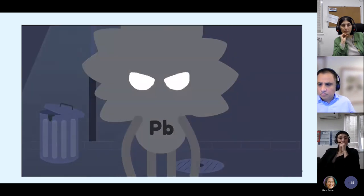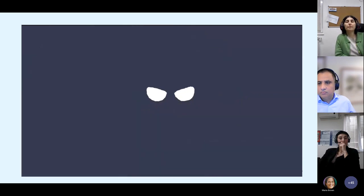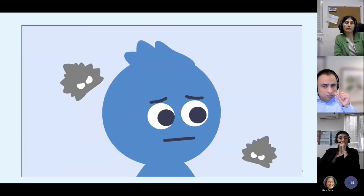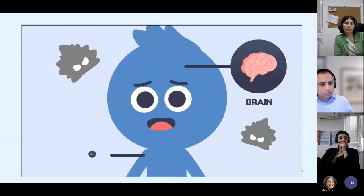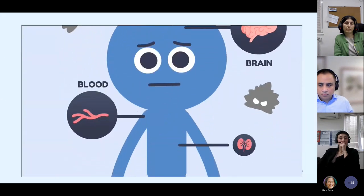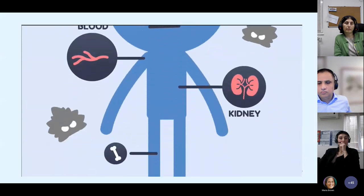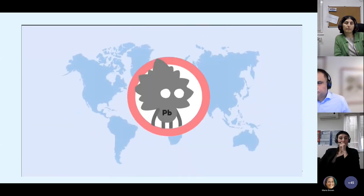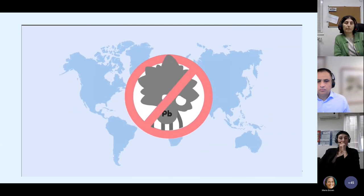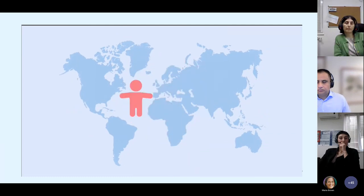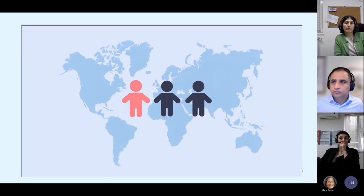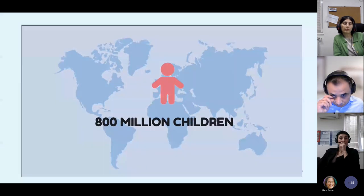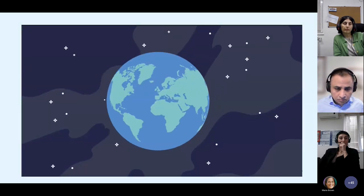Lead is a highly toxic metal with particularly harmful effects on children. Young children absorb about four to five times as much lead as adults, and it affects almost every organ in a child's body. Even limited exposure can cause damage that's devastating and permanent. One in three children worldwide is now affected — around 800 million children across the globe are at risk of lead poisoning.